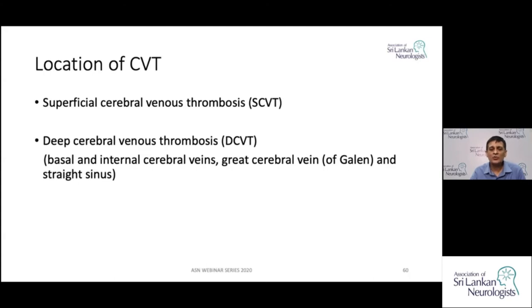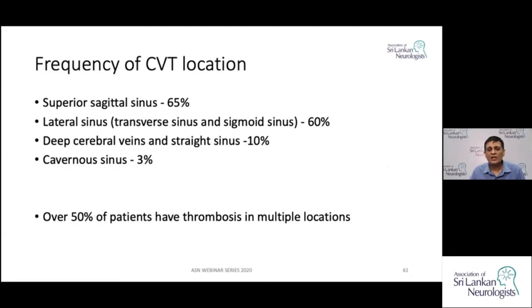The commonest location is superior sagittal sinus thrombosis, followed by lateral sinus thrombosis — a term that refers to a combination of the transverse sinus and sigmoid sinus. Less common is deep cerebral vein and straight sinus thrombosis, which forms about 10% of cases. Cavernous sinus thrombosis is now about 3%, as its incidence has decreased with the availability of antibiotics.